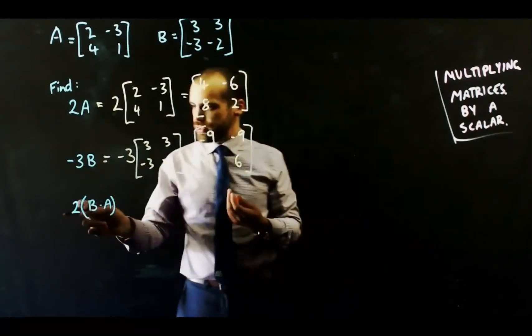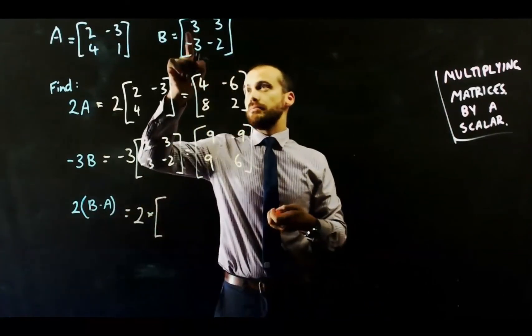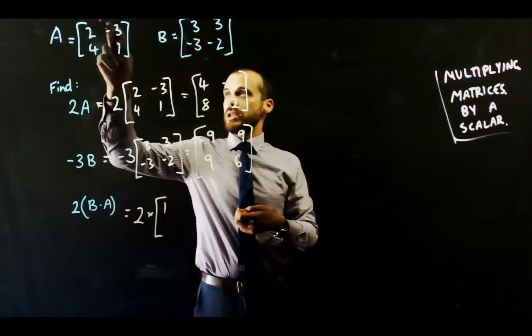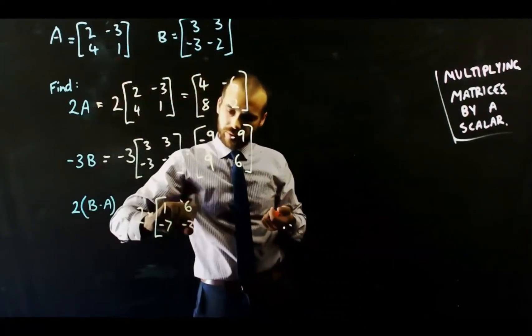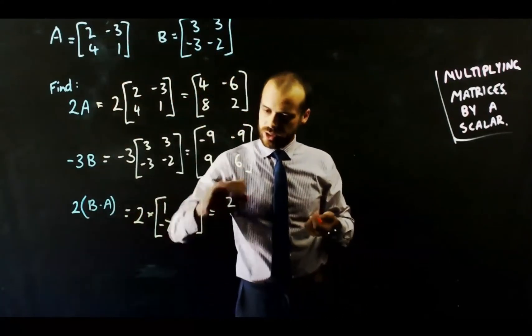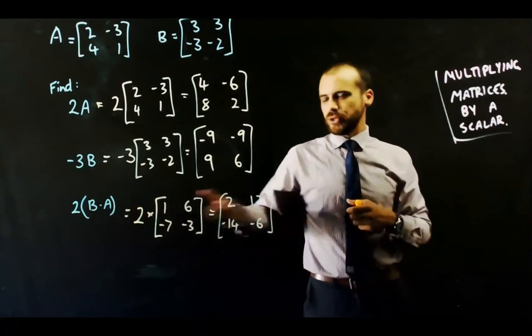And then, we've still got to follow all of our rules for subtraction. So we've got 2(B minus A). So we subtract one matrix from the other, and then we multiply that matrix by two. Multiplying matrices by a scalar. Not difficult at all.